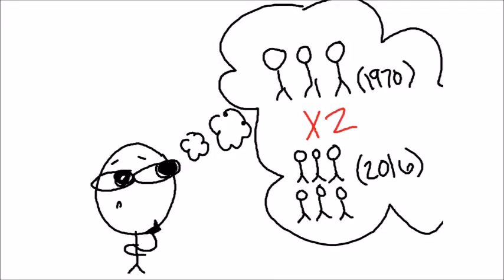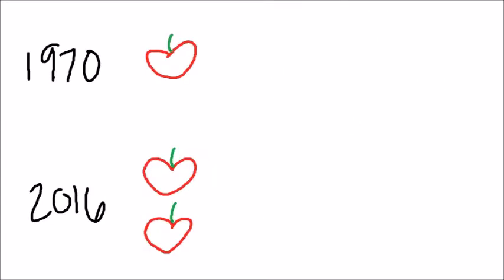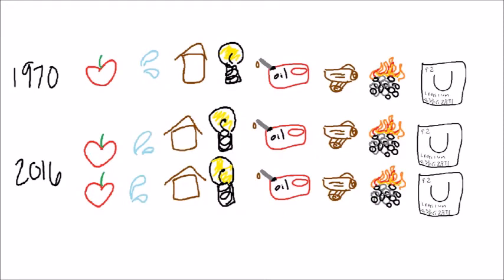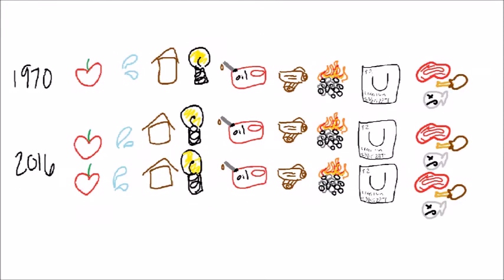Our population size has nearly doubled since the 1970s, which means we've doubled our demand for food, water, space, electricity, natural resources, meats and fishes, grains and vegetation.